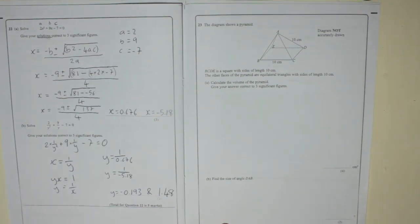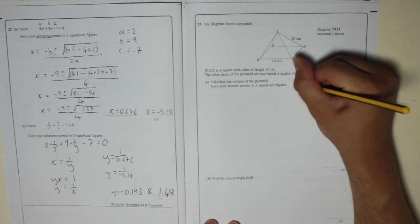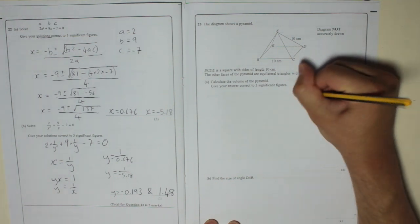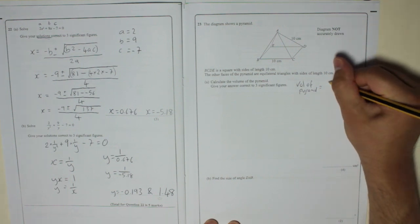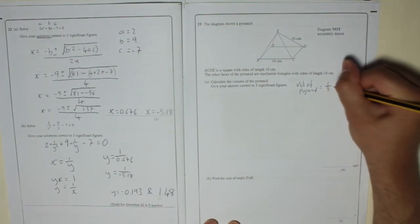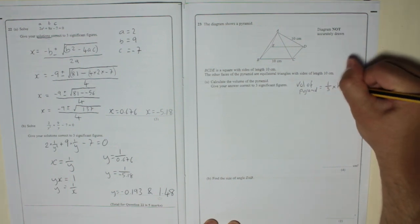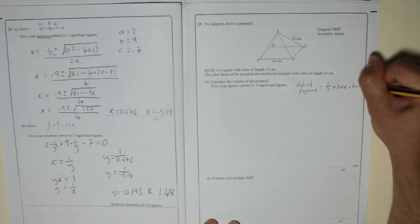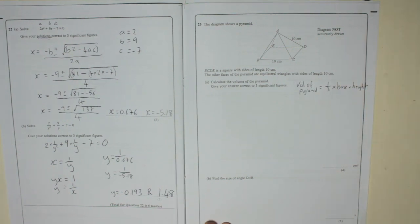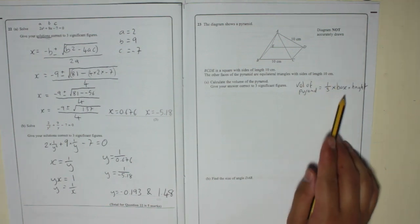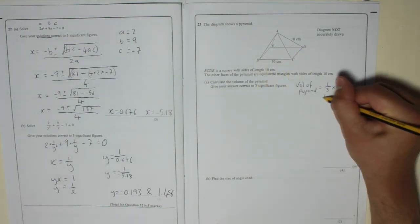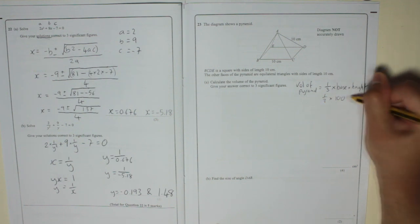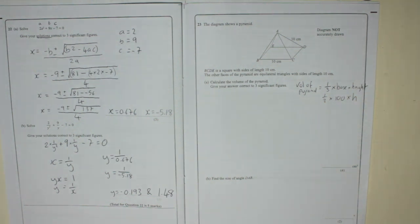Now, the volume of the pyramid is equal to a third times the base times the height. We can work the base out. The base is 10 times 10. So a third times 100 times the height. We don't know the height, and it's not 10.